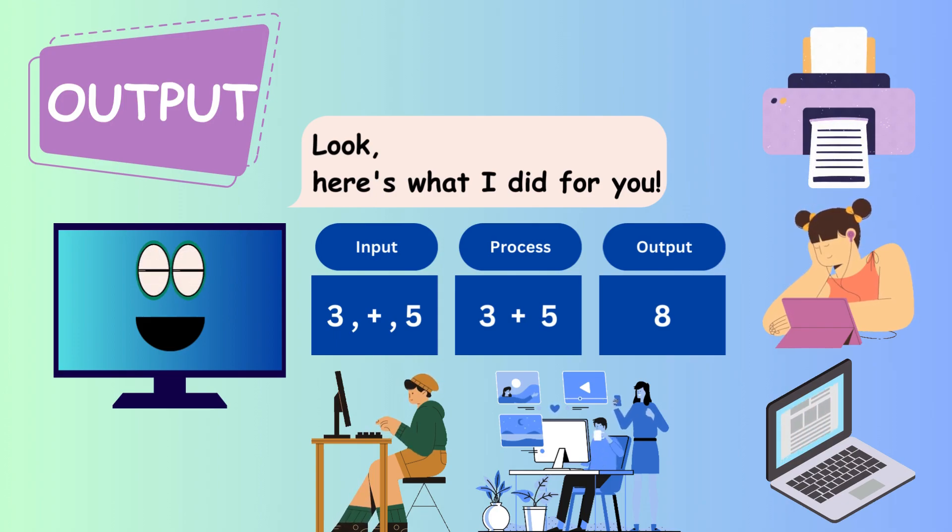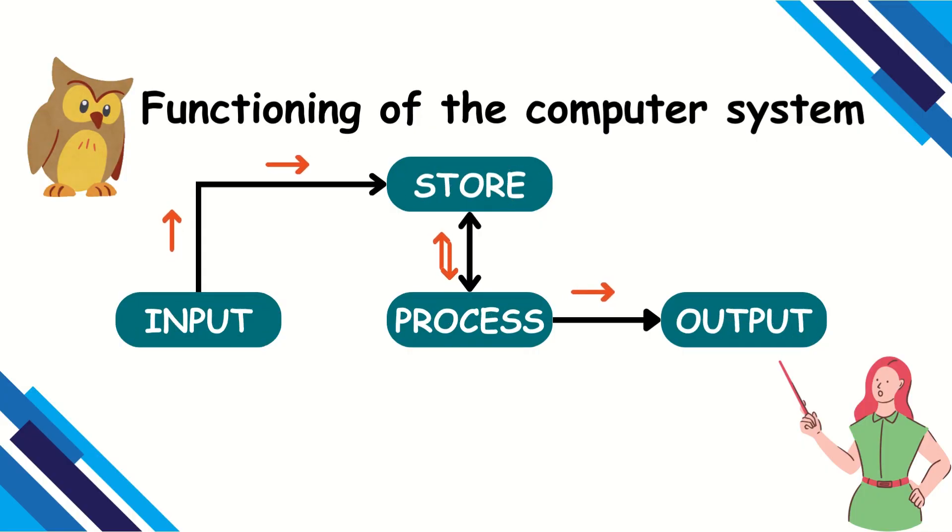Imagine you asked your robot friend to draw a picture. When it's done, you look at the drawing. That's the output. The computer shows you the results of what it did.